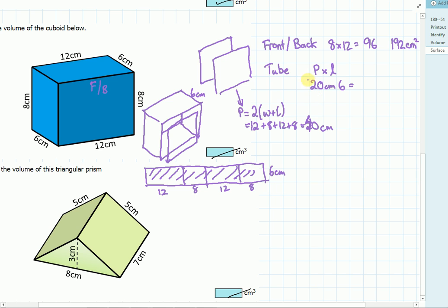Twelve. Forty. So the perimeter is forty times the six of the height. And the area of this piece is going to be two hundred and forty centimeters squared. And we add those two together to get four hundred and thirty-two centimeters squared.